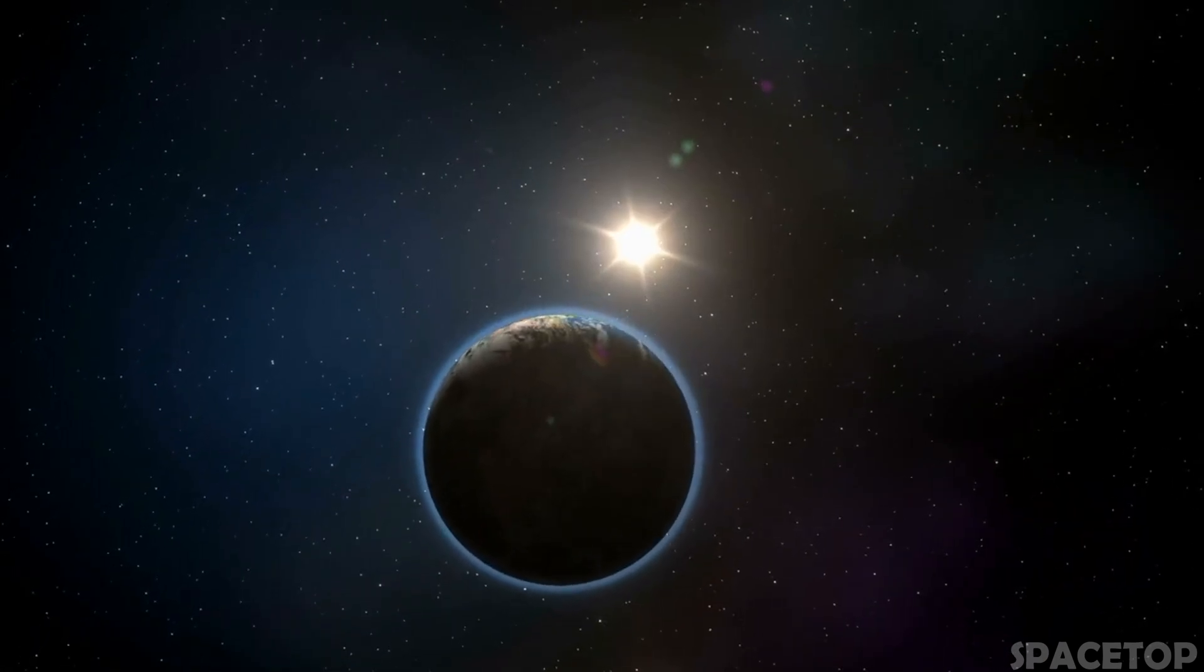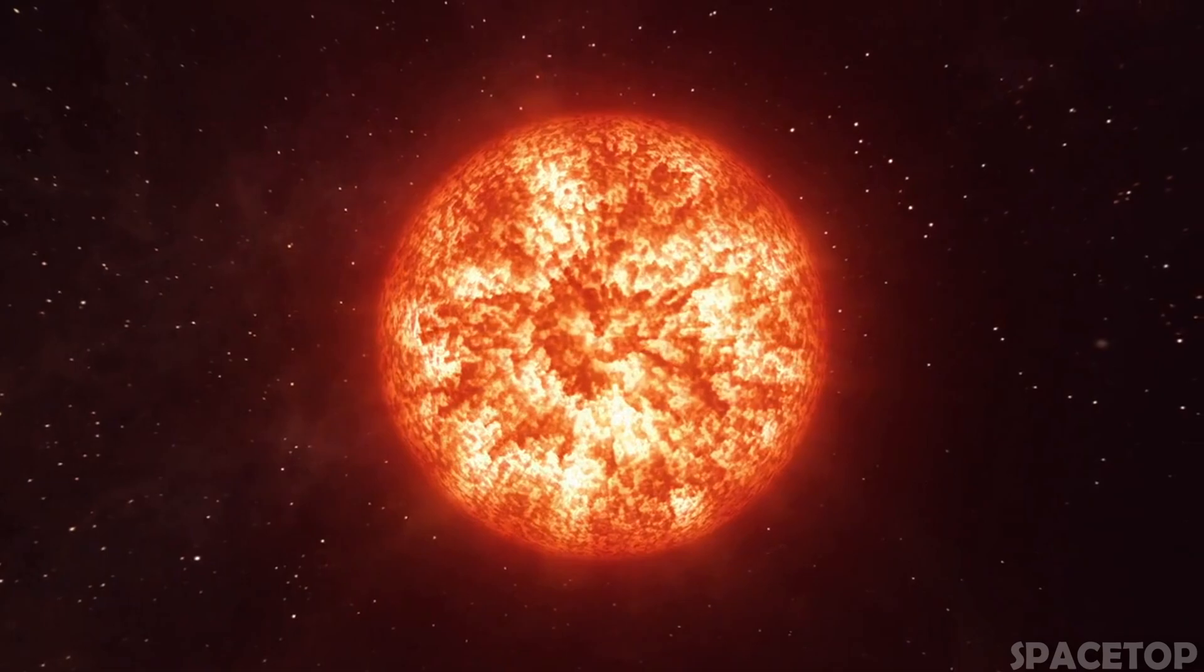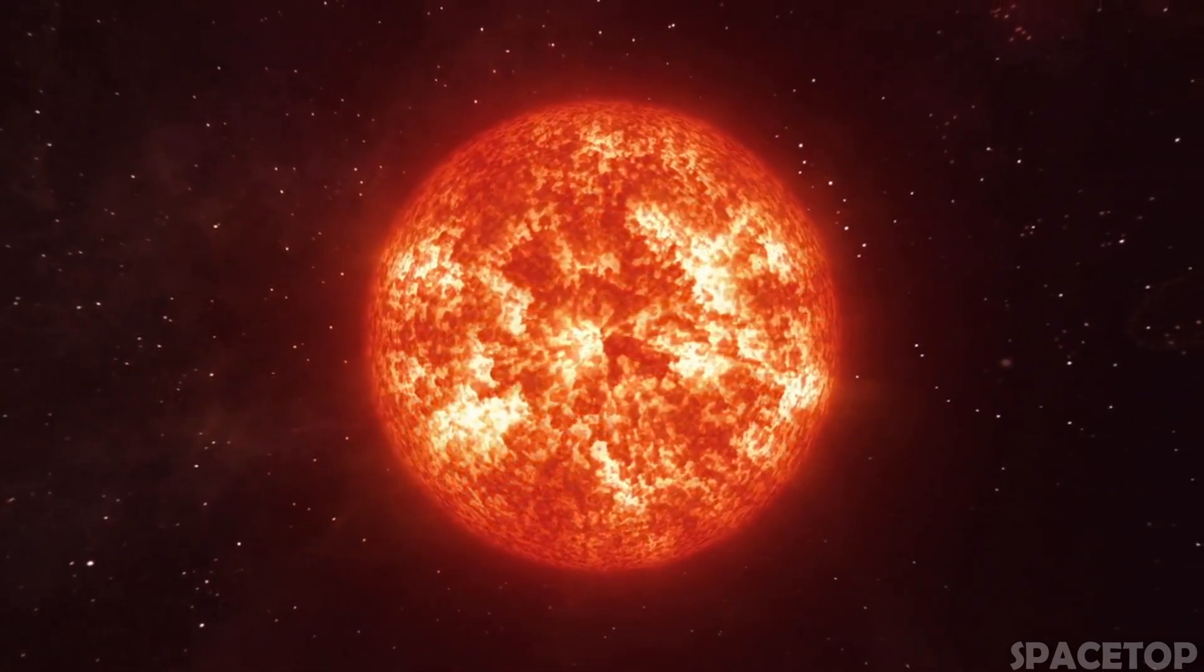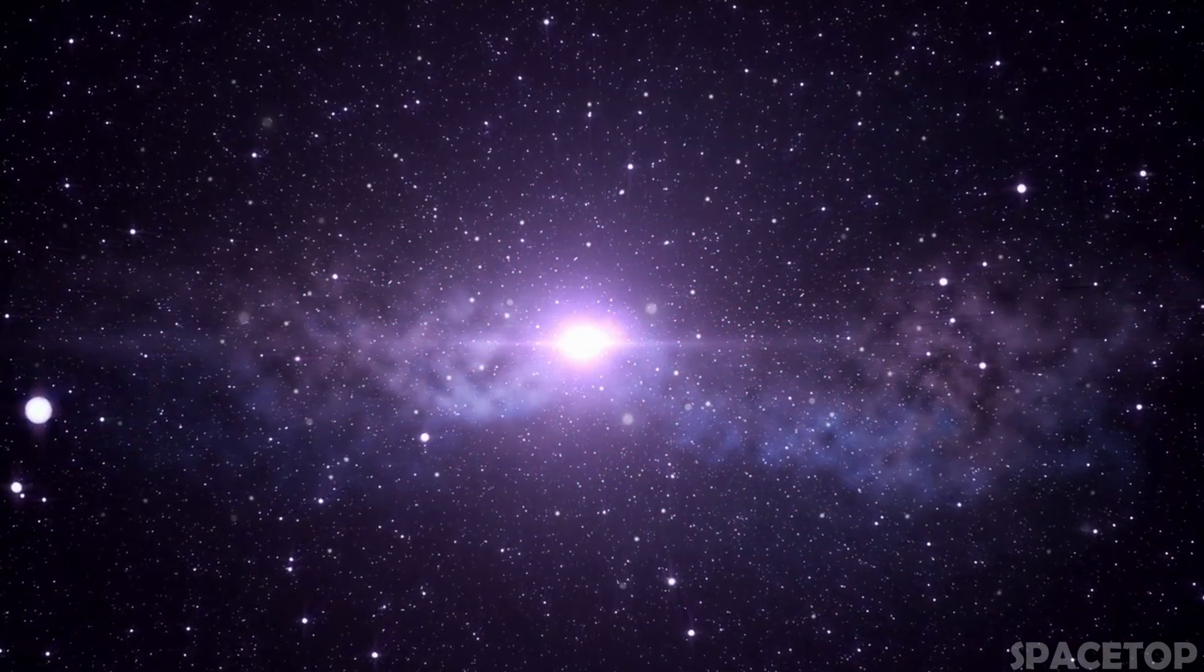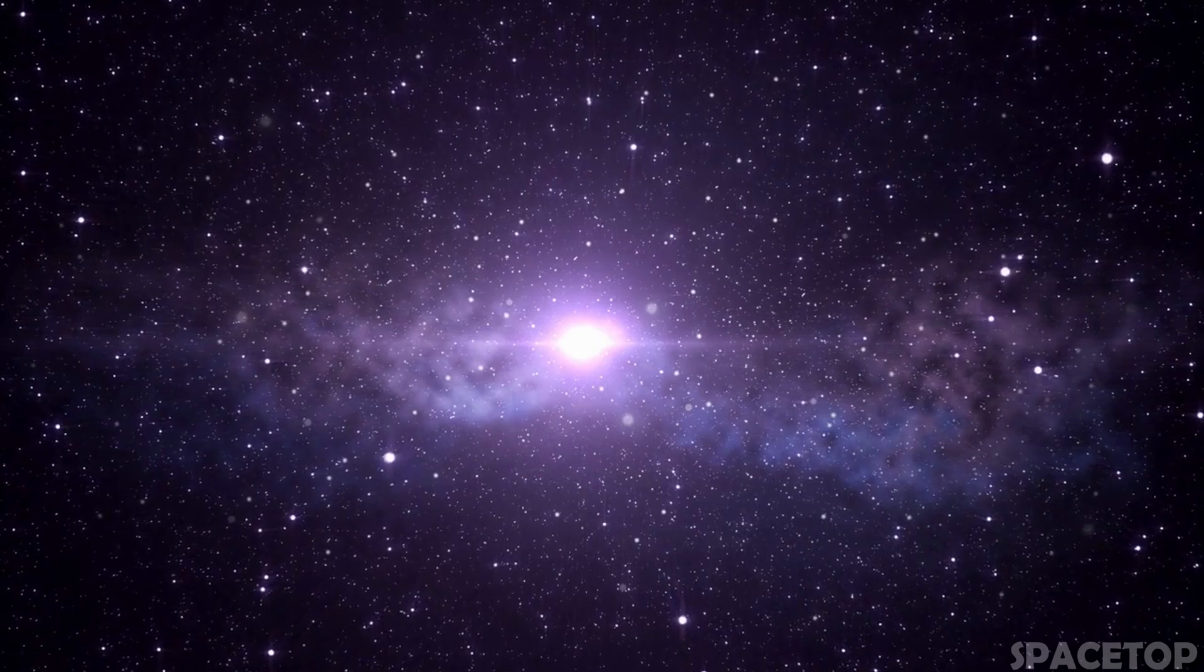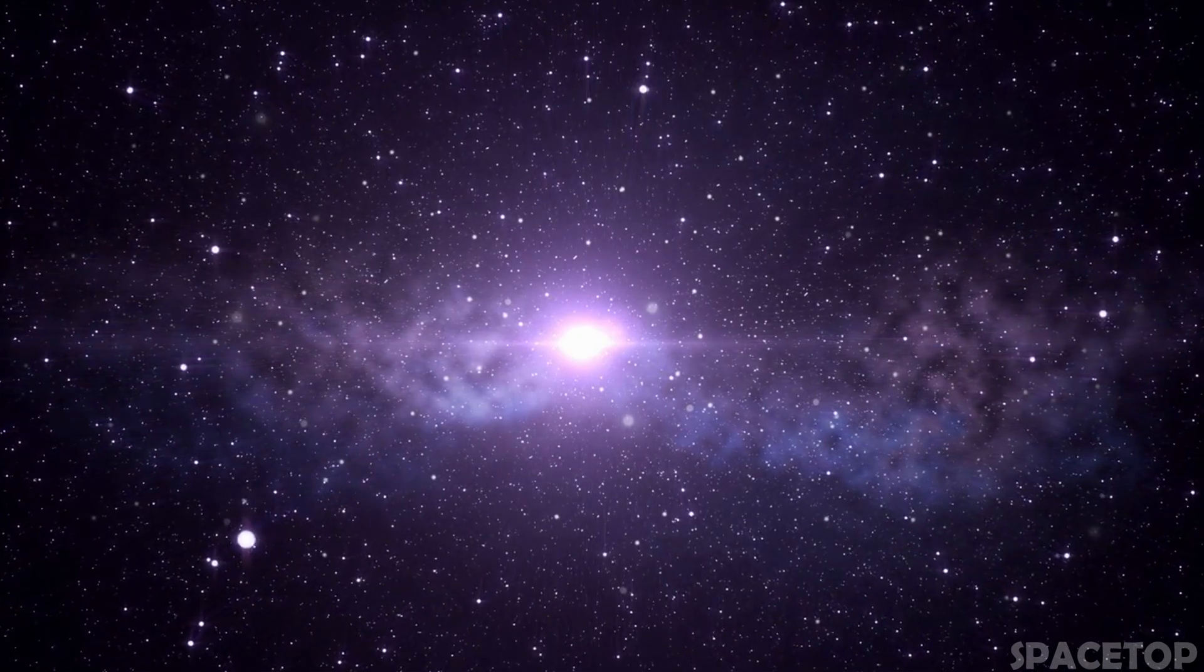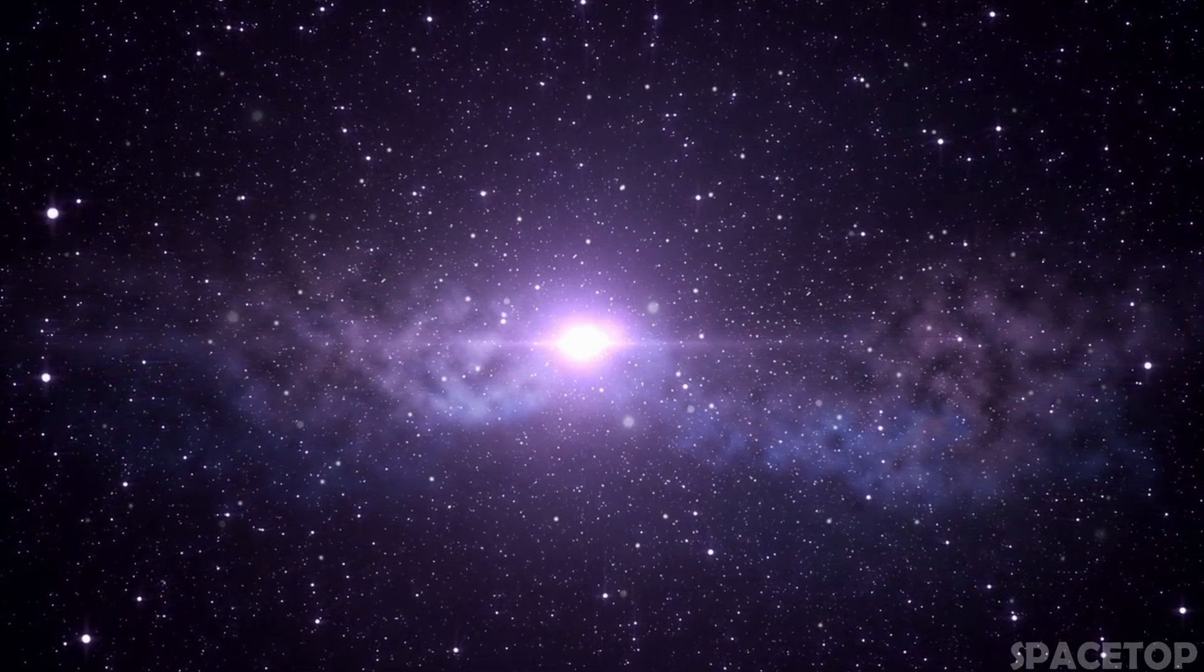Most potentially habitable planets revolve around so-called red dwarfs. Despite the fact that red dwarfs are colder, they tend to be more active than sun-like stars. Planets may be exposed to more harmful ultraviolet radiation than what we are used to here on Earth. Because of this, the surface temperature can range from minus 73 to 47 degrees Celsius.